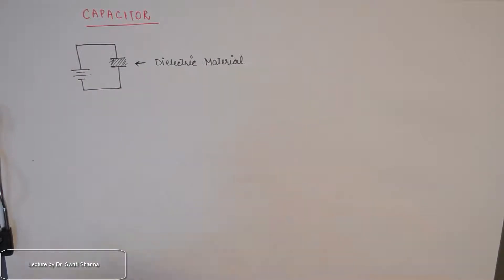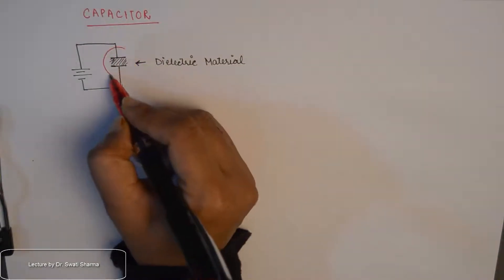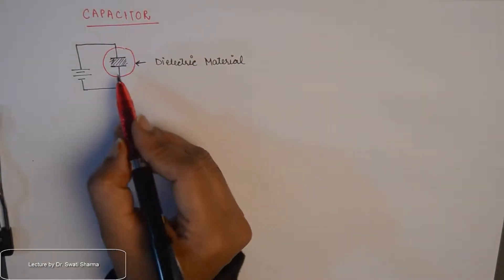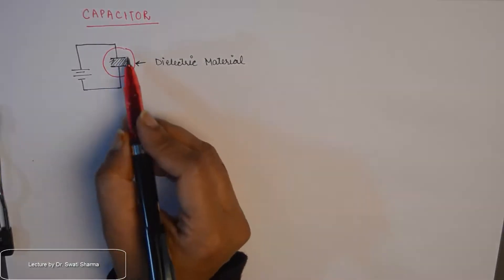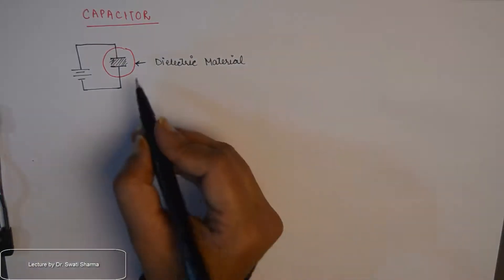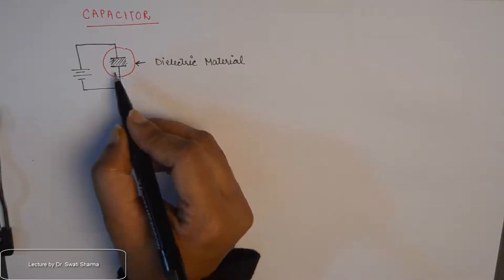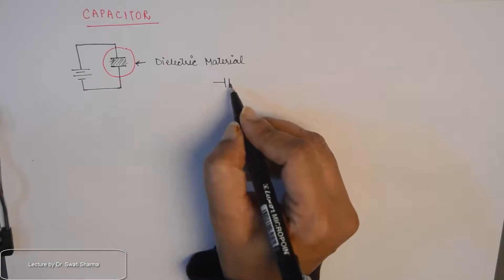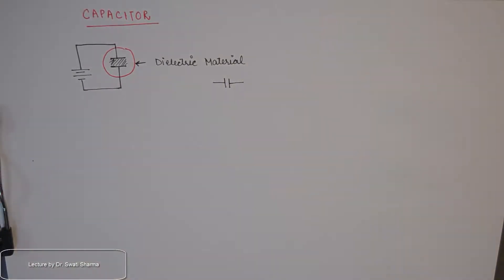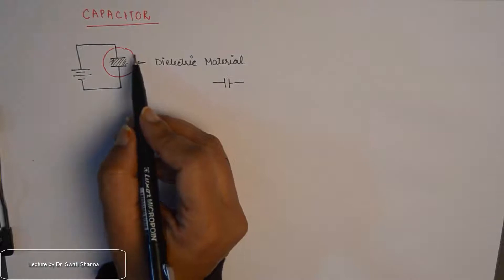A capacitor consists of two parallel plates sandwiched with a dielectric material. This is the basic construction of a capacitor — two metal plates with a dielectric material between them. The symbol commonly used for a capacitor is two parallel lines representing the plates.